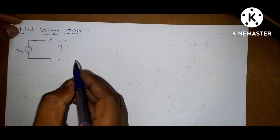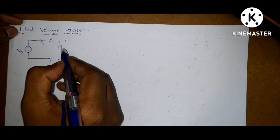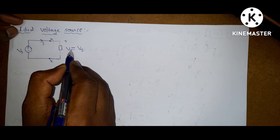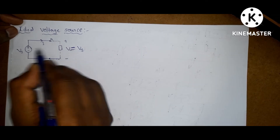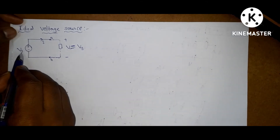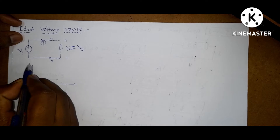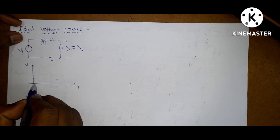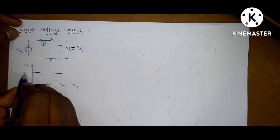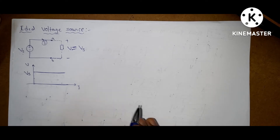First one is ideal voltage source. For all values of current, the terminal voltage of the voltage source equals the internal voltage of the voltage source — that is, V equals Vs. This means the ideal voltage source does not depend on the current. If we draw the graph with voltage on one axis and current on the other, as current increases, voltage remains constant.